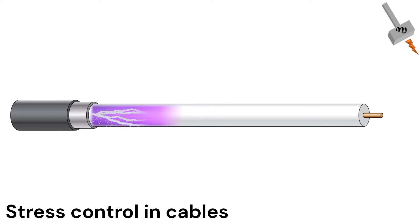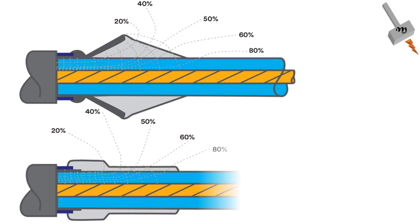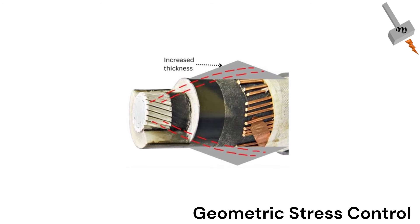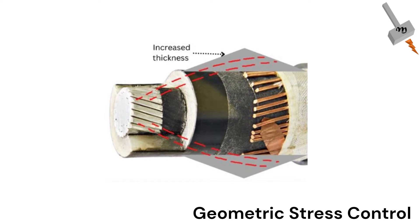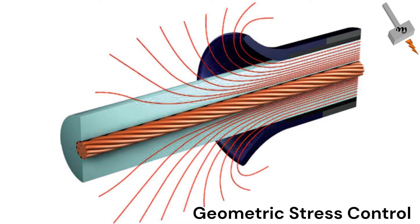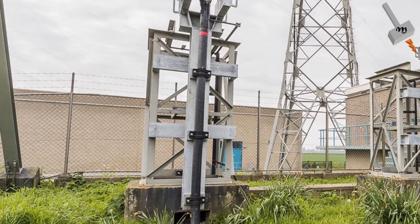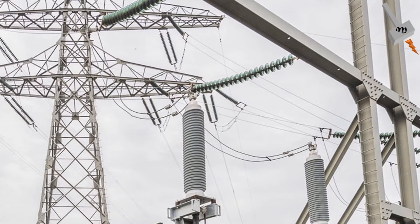There are two common methods for stress control. The first is geometric stress control and the other is capacitive stress control. The geometric stress control method increases the effective thickness of the insulating material near the shield discontinuity — this is the method used from the early days of cable terminations. The cone-shaped component forces the electric field stress to spread out more evenly, thus reducing the stress at the discontinuity. A disadvantage of geometric stress control is the thicker profile, limited bend flexibility, and difficulty of installation.